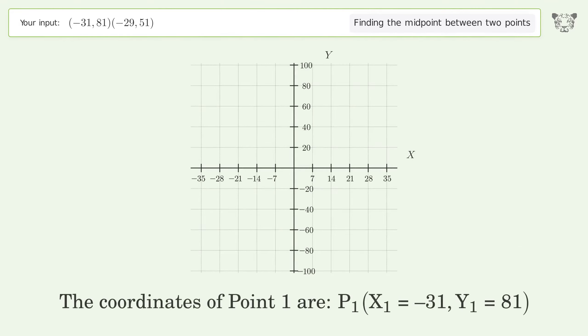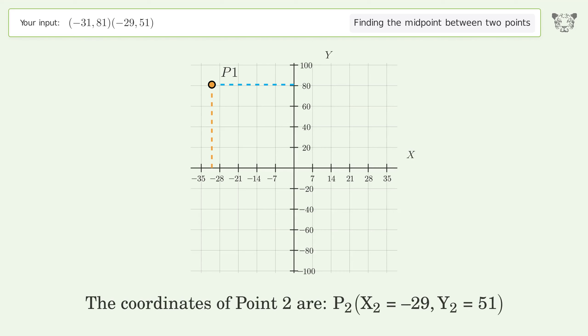The coordinates of point 1 are x1 equals negative 31, y1 equals 81. The coordinates of point 2 are x2 equals negative 29, y2 equals 51. Pm represents the midpoint of the two points.